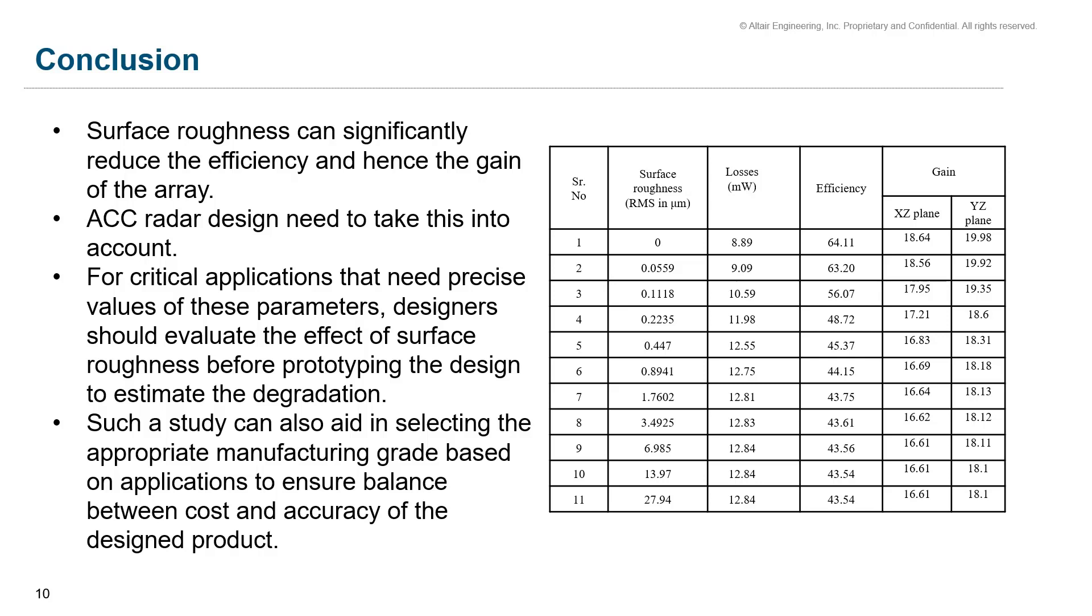designers or engineers should evaluate the effect of surface roughness before prototyping the design to estimate the overall degradation. Such a study can also aid in selecting the appropriate manufacturing grid based on the applications to ensure balance between the cost and the accuracy of the designed product. This study can also aid in identifying the right material properties that can be used for specific applications that require high precision.